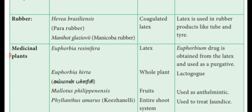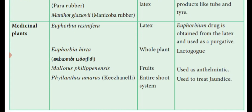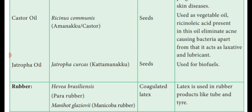Then, Medicinal Plants. Euphorbia resinifera — latex is the useful part. Euphorbium drug is obtained from the latex and used as a purgative. Then Euphorbia hirta, in Tamil known as Amman Pacharasi. The entire plant is used as a lactagogue. Then Mallotus philippinensis — fruit used as an anthelmintic. Phyllanthus amarus — the entire shoot system is used to cure jaundice. These are the different medicinal plants and their uses.